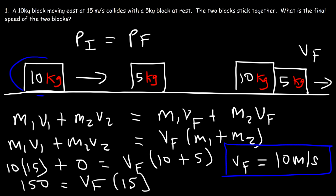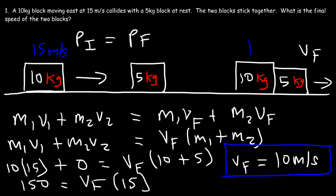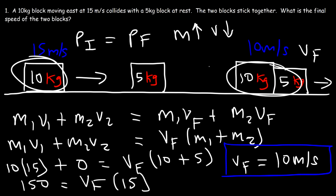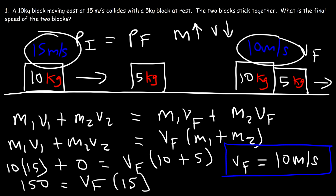So here we had a 10 kg mass moving at 15 meters per second, and now we have a combined mass of 15 kg moving at 10 meters per second. Whenever momentum is conserved, if you increase the mass of the system, the speed decreases. The mass went from 10 to 15 kg, and the speed decreased from 15 to 10 meters per second. Make sure you understand that concept.